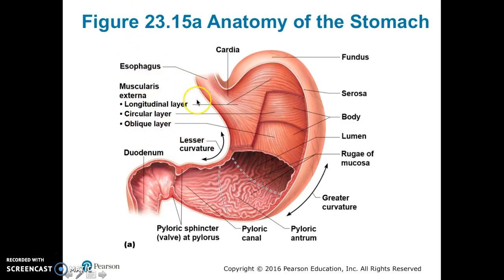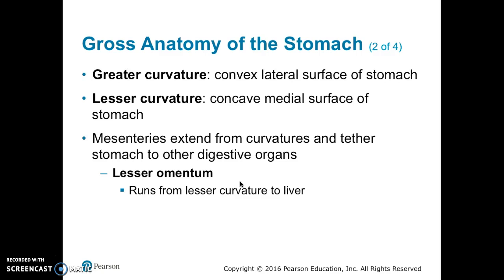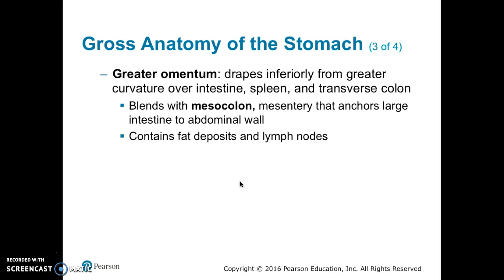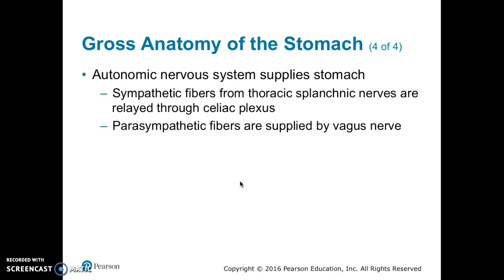The pylorus is continuous with the duodenum through the pyloric valve, the sphincter controlling stomach emptying. Also note the lesser curvature and the greater curvature. On the cadaver stomach, you can see the fundus, the body, the greater curvature down to the pylorus. The greater curvature is the convex lateral surface; the lesser curvature is the concave medial surface. Mesenteries extend from both curvatures: the lesser omentum runs from the lesser curvature to the liver, and the greater omentum drapes inferiorly from the greater curvature over the intestine, spleen, and transverse colon. The greater omentum contains fat deposits and lymph nodes.